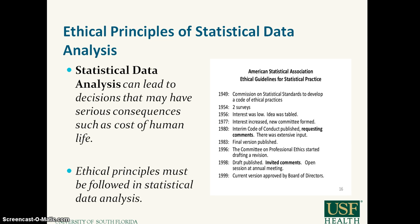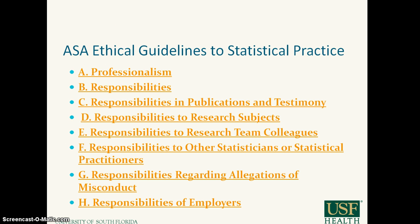The ASA has a history of how these ethical guidelines were produced, and they cover several topics. You can go to the ASA ethical guidelines for statistical practice website and do more reading. The topics include: A — professionalism; B — responsibilities; responsibility in publication and testimony; responsibility to research subjects; responsibility to research team colleagues; responsibility to other statisticians or statistical practitioners; responsibility regarding allegations of misconduct; and responsibilities of employers.